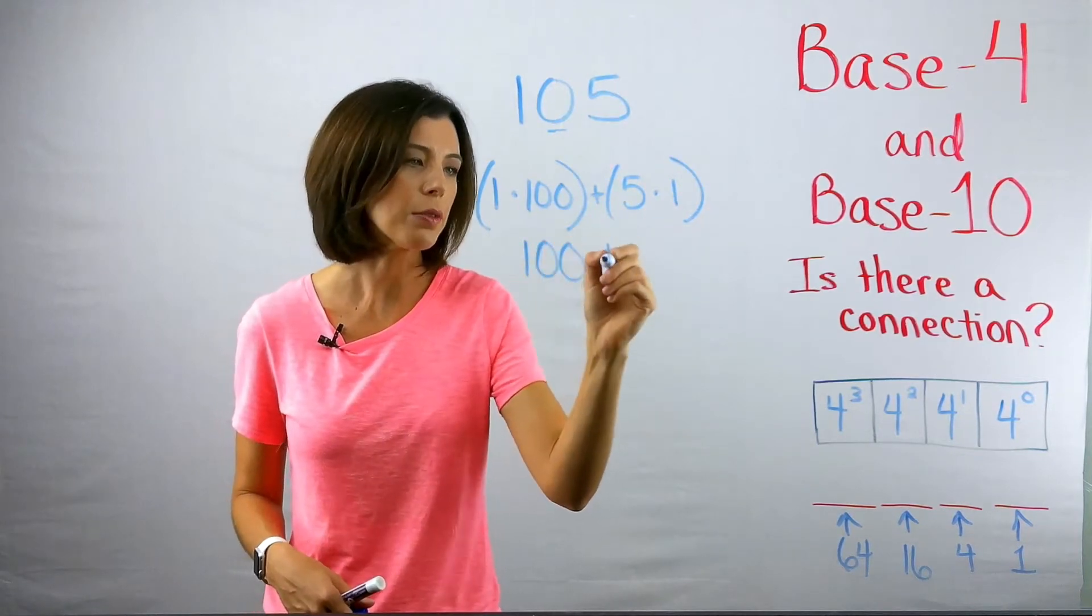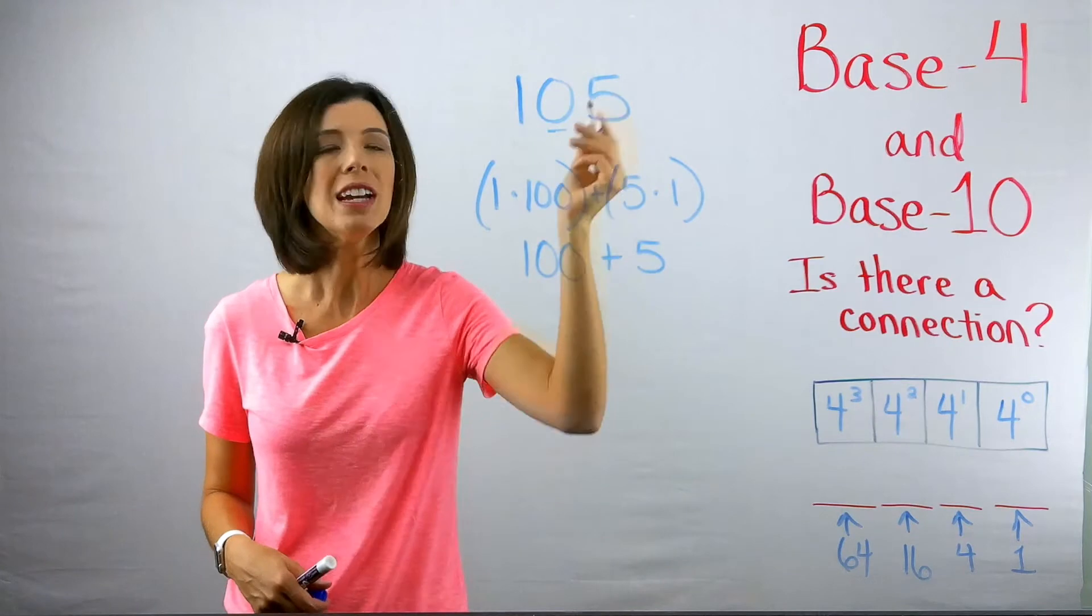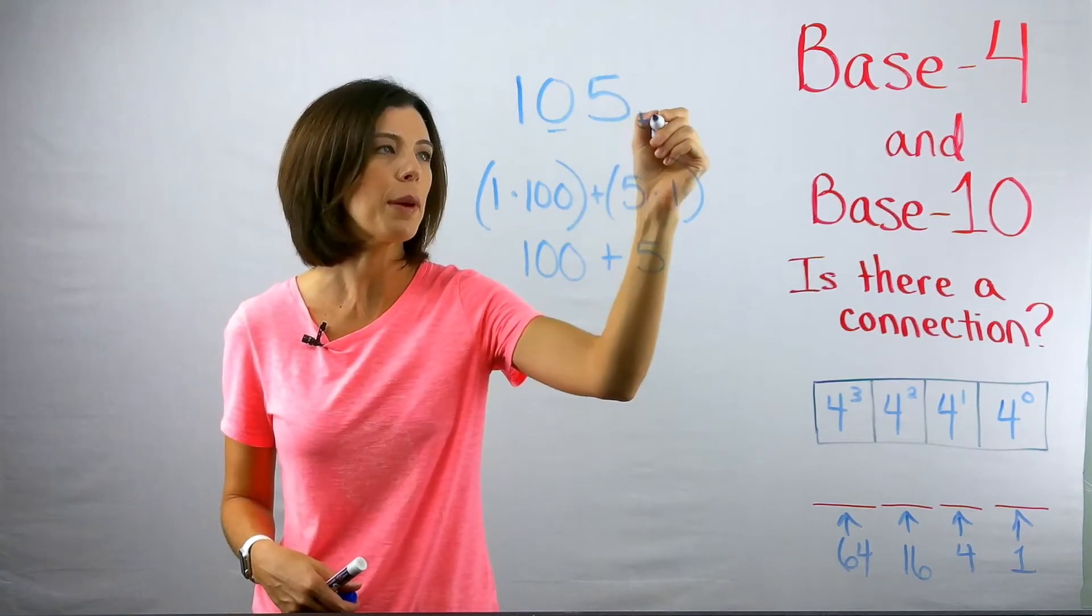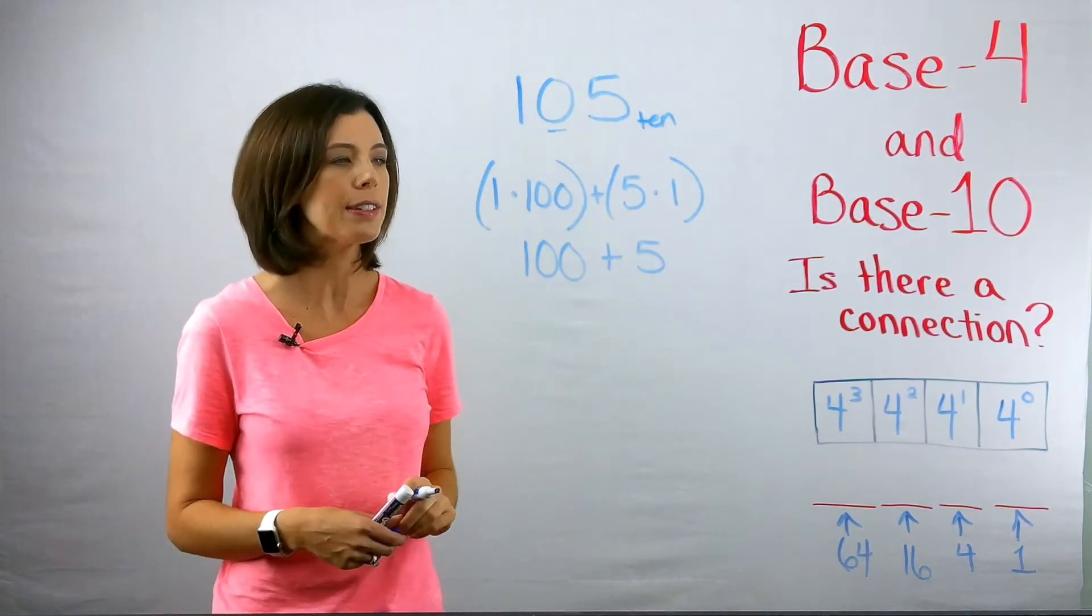Mathematically, it's correct, right? 100 plus five still gives me 105. By the way, I'm operating in base 10 right now when I'm thinking about this.